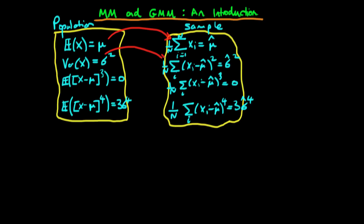We do that for each of, in this case, four moment conditions within our population; we formulate the equivalent within our sample.